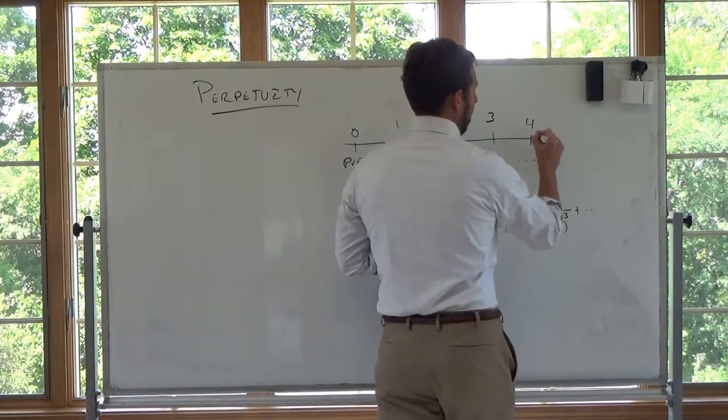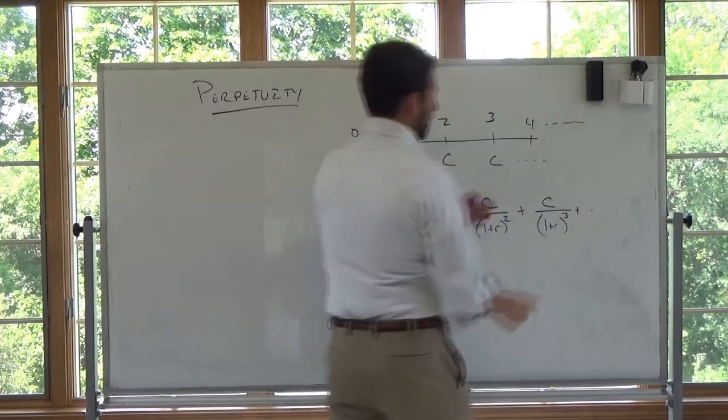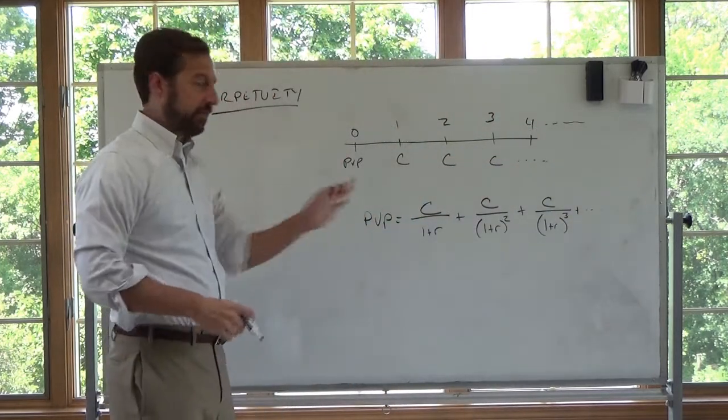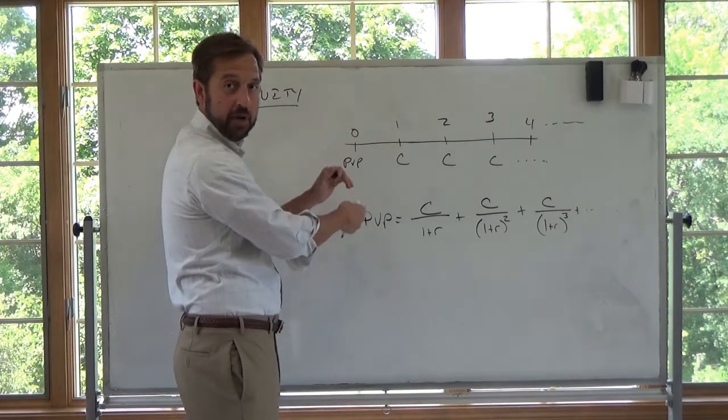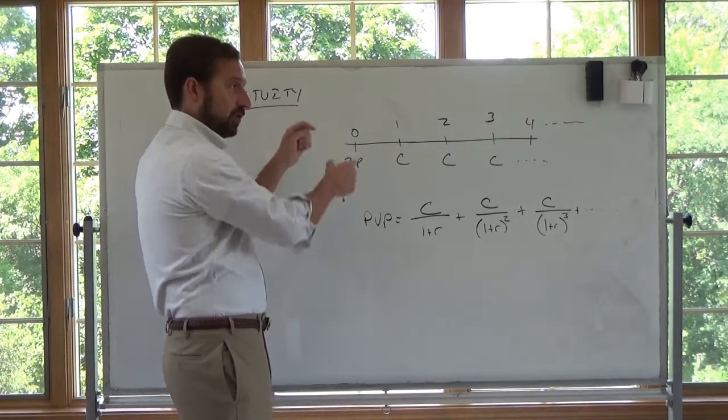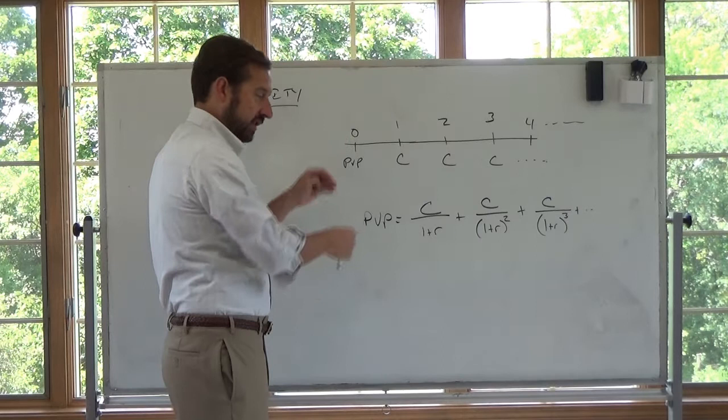Of course, this goes on—four, dot dot dot—discount the next one back four periods, five periods, and so forth. And then once they're all at time zero, sum them up. Remember, if all the cash flows are in time zero dollars, we can sum them.